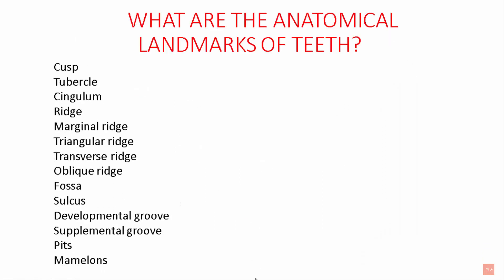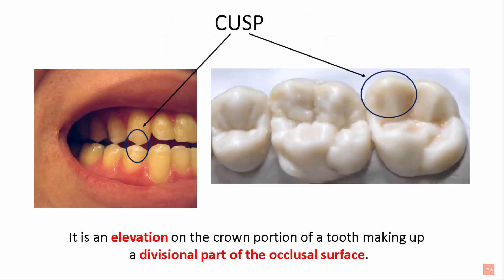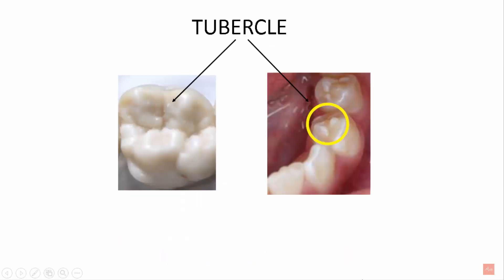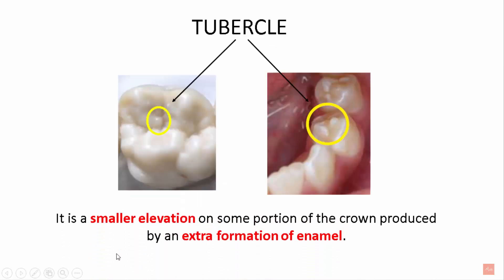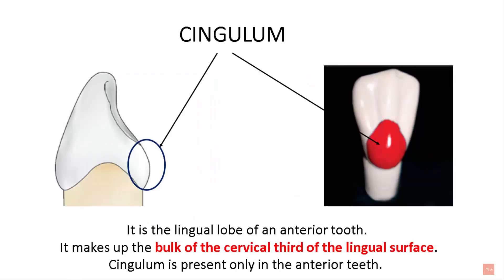Now let's go through the anatomical landmarks one by one. A cusp is an elevation on the crown portion of a tooth making up the divisional part of the occlusal surface. A tubercle is a smaller elevation compared to the cusp on some portion of the crown, produced by extra formation of enamel. Cingulum is the lingual lobe of an anterior tooth — it makes up the bulk of the cervical third of the lingual surface and is present only in anterior teeth.